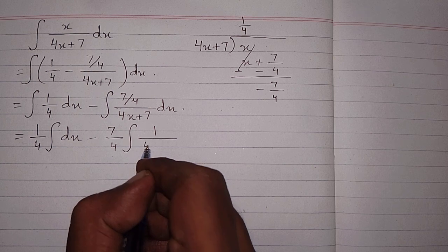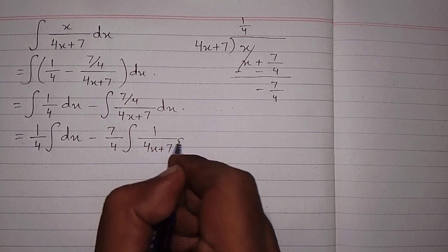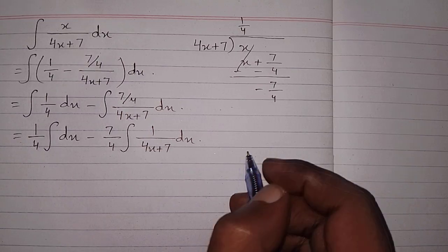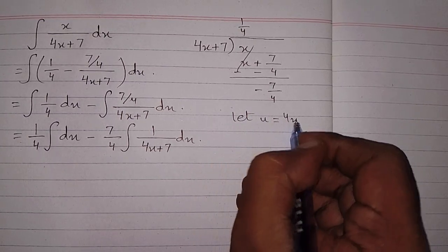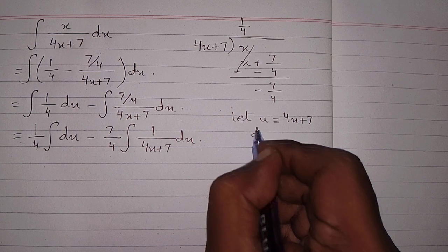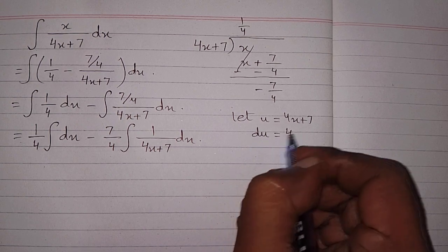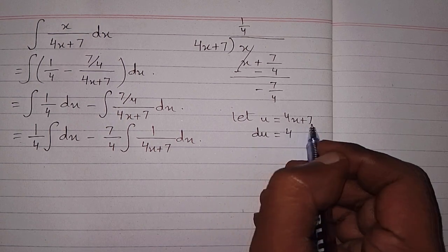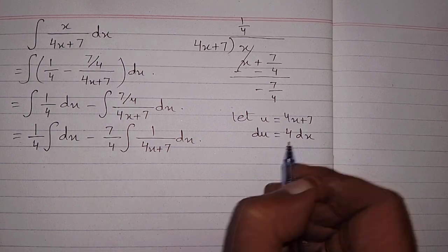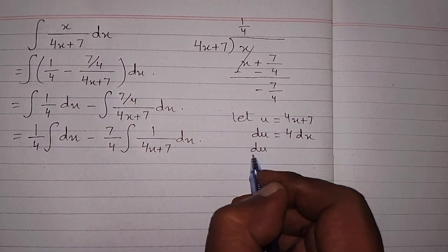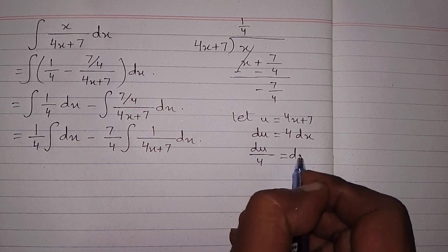Now let u is equal to 4x plus 7, so the differential du is equal to the derivative of 4x plus 7, which is 4, multiply by the differential dx. So we have du upon 4 is equal to dx.